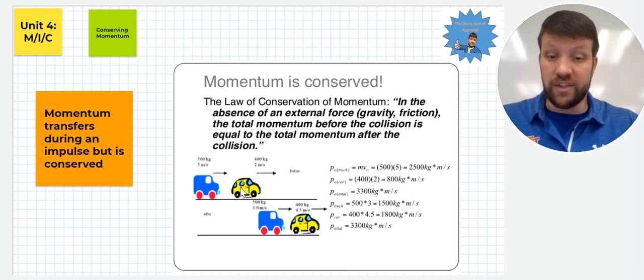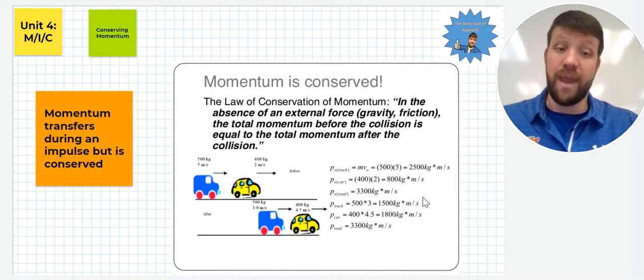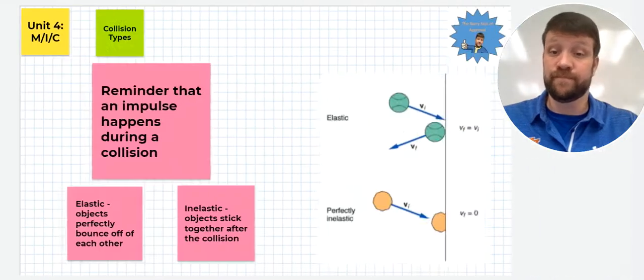We have a larger truck hitting a smaller car, and the truck is going faster. The truck ends up slowing down after the collision, and the car speeds up. And we see the math here to back that up.